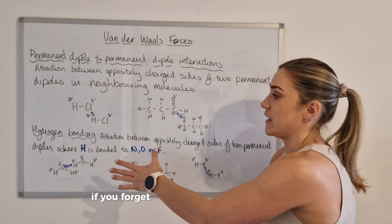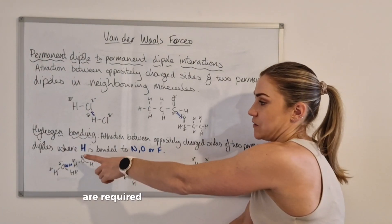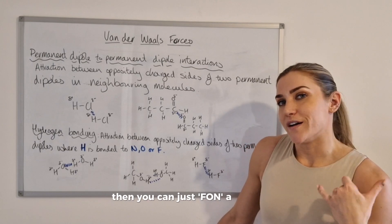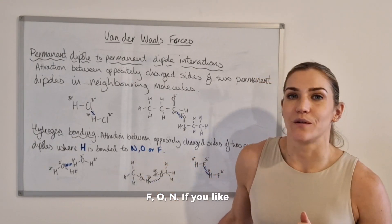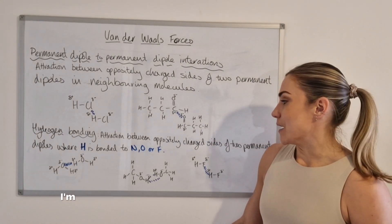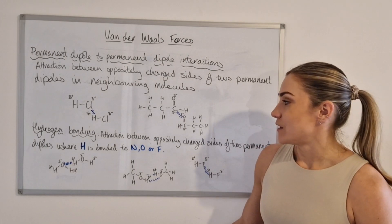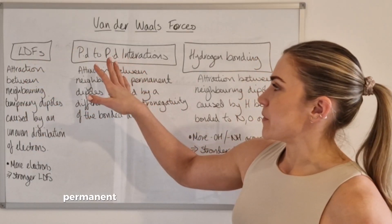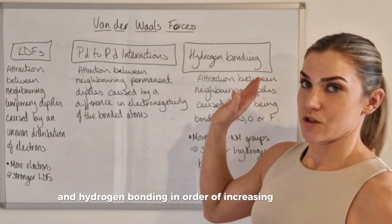If you forget in the middle of your exam what elements are required for hydrogen bonding to occur, you can just remember FON — F, O, N. We have London dispersion forces, permanent dipole to permanent dipole interactions, and hydrogen bonding in order of increasing strength.